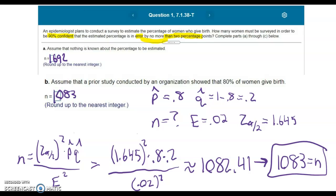You can see that when you have a point estimate to work with, a smaller sample size is needed than when you have nothing known about the percentage to be estimated.